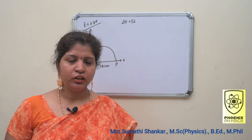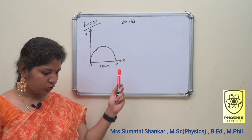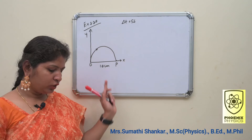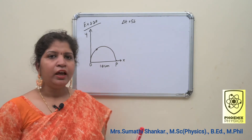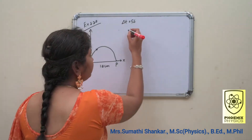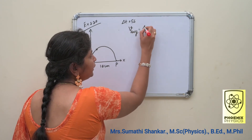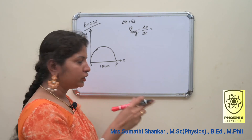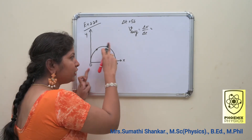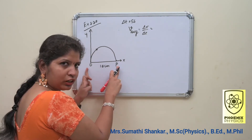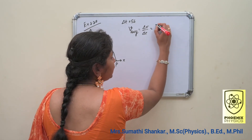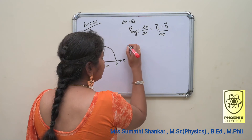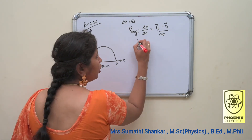Based on this concept, one example problem is given. Consider an object travelling in a semicircular path from point O to point P in 5 seconds. Calculate the average velocity and average speed. The formula for average velocity V average is equal to delta R divided by delta T. Delta R is the difference between the final and initial position, that is Rp minus R0 divided by delta T. The particle starts from the origin, so R0 is equal to 0.